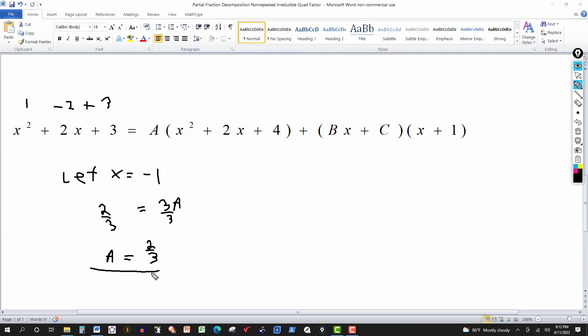So we know the value of A. Now we need the values of B and C. So now I'm going to come up over here. Say now let's let. You can pick any number you want. Obviously you want to pick convenient numbers. They're not too large. They will simplify this. So let's pick x to be 0.